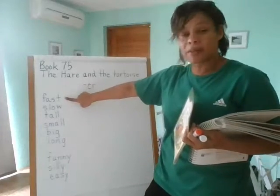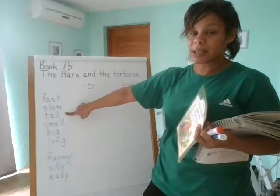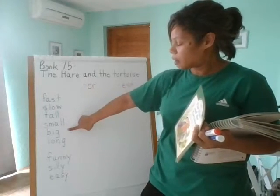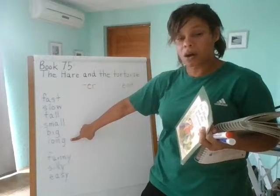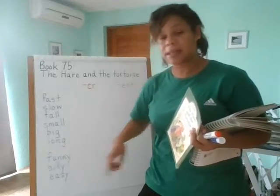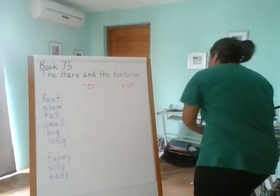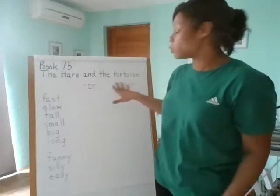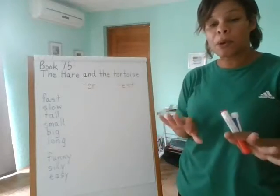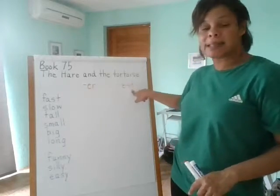So we have the words: fast, slow, tall, small, big, long, funny, silly, and easy. For most of these words we can simply add -er to show a comparison or -est, but with some of these words there's going to be a slight change. Put me on pause so that you can write these base words down, write our two headers — er and est — and then we'll begin.